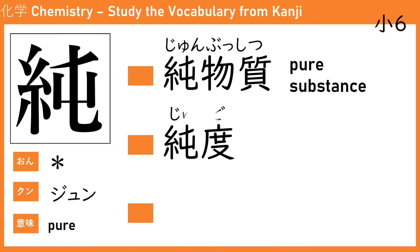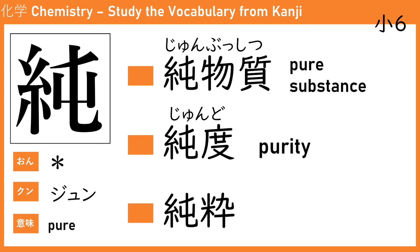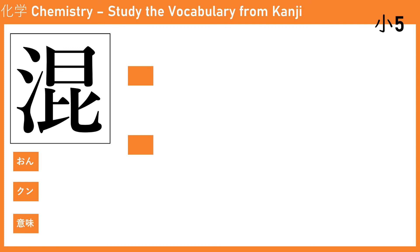The next word is 純度 (jun-do), meaning purity — the level of purity, like 100% or 99.9%. We also have 純粋 (jun-sui), which refers more to character — like a kid who is very pure in character. 純粋な子供 means a pure child.